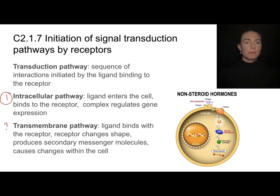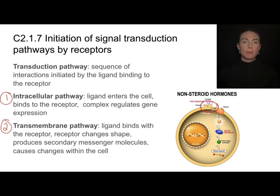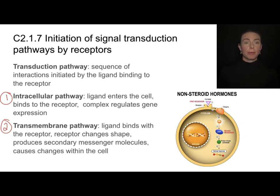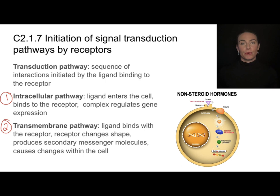Then we have the transmembrane pathway. Transmembrane pathways happen when a ligand binds with a transmembrane protein because the ligand cannot enter the cell. When that binding occurs, this protein receptor changes shape, and that change of shape kicks off a secondary messenger molecule sequence—producing secondary messenger molecules that then cause further changes within the cell. So we have two basic types depending on whether the ligand can or cannot enter the cell.